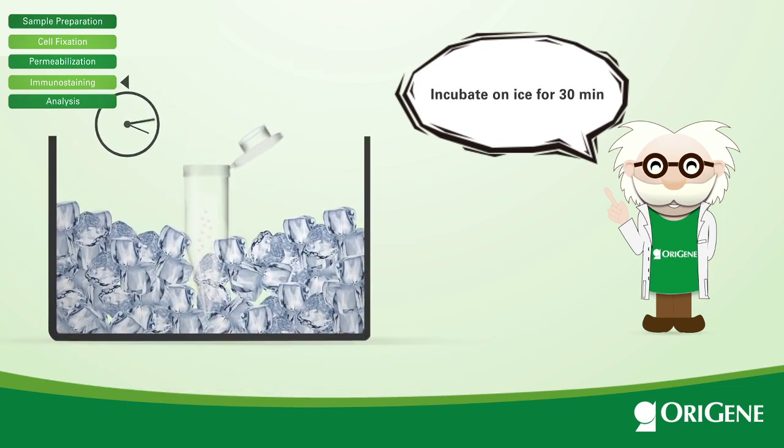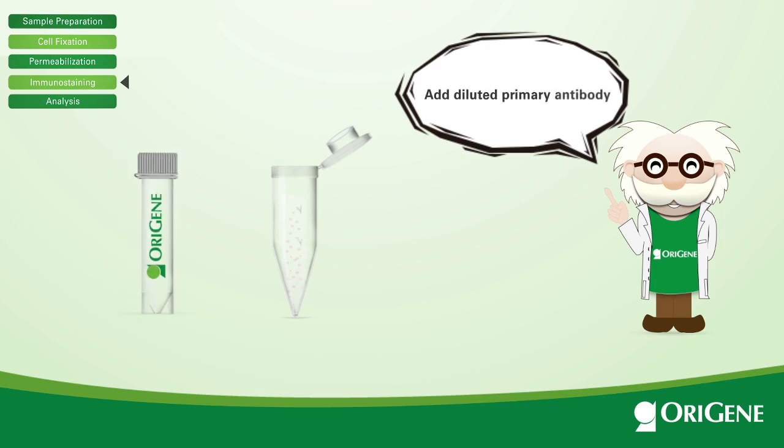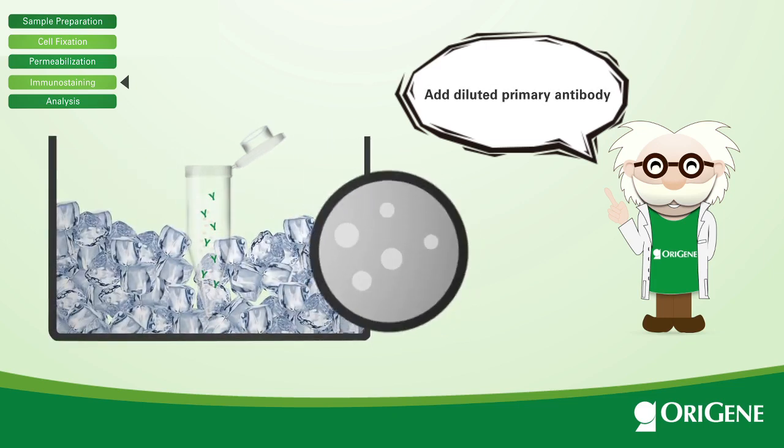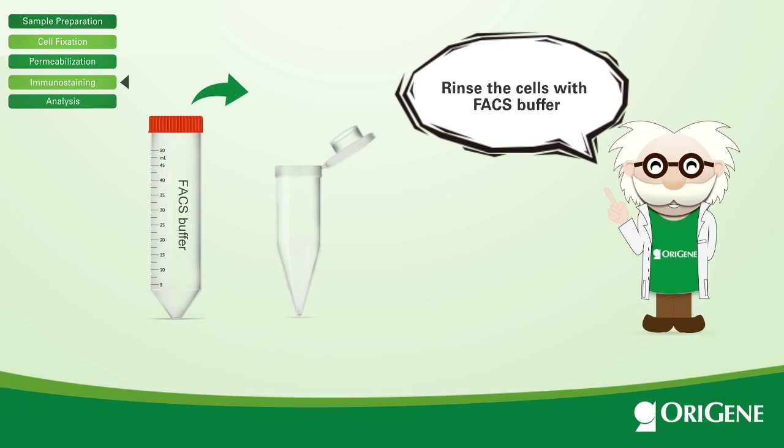Incubate on ice for 30 minutes and discard supernatants. Add primary antibody at the appropriate dilution to the test tubes and incubate for 30 minutes on ice. Centrifuge and discard the supernatant. Wash the cells three times by centrifugation using FACS buffer and remove the supernatant after the last wash.